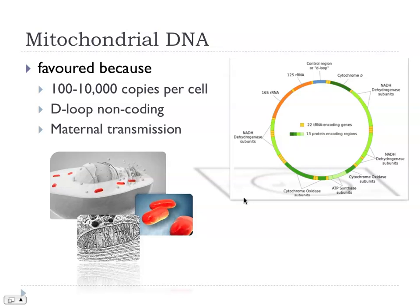One of the main targets used initially was mitochondrial DNA. There are several reasons for that: it's found in multiple copies — hundreds or thousands per cell — so it's proportionally much more abundant than nuclear genes. There's a part of the mitochondrial genome called the D-loop, which doesn't code for any proteins, so the selection rate is relaxed and it tends to be much more variable than protein-coding genes, giving a nice handle on variation. Also, mitochondria are transmitted through the maternal line — a mother passes mitochondria to her sons and daughters, but only the daughters' lineage carries that forward.